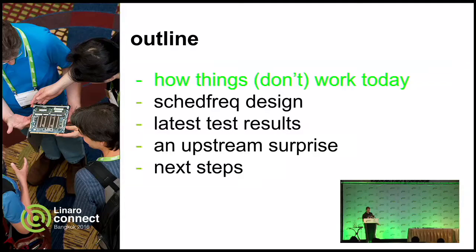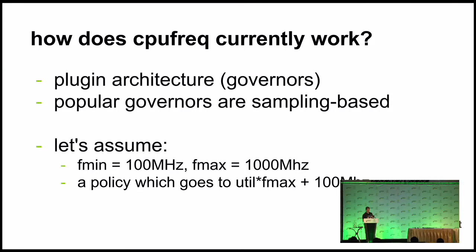Just to go through the motivation behind this project — I'm not going to spend a whole lot of time on this — but how things don't work today and the problems we're trying to solve. How does CPUFreq work today? It's a plug-in architecture where you have governors that implement different kinds of policy. The most popular ones today, on-demand and interactive, are sampling-based. I've got some examples illustrating different scenarios where that's a problem and doesn't give you the optimal response.